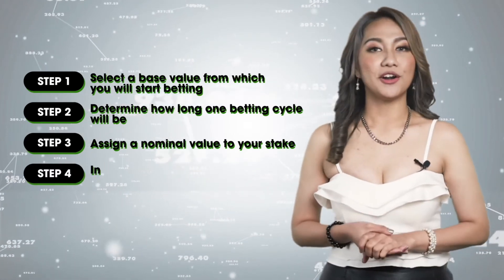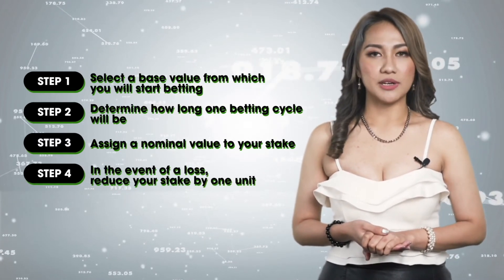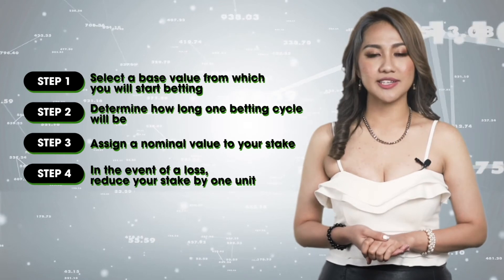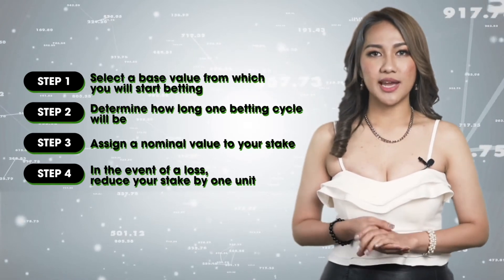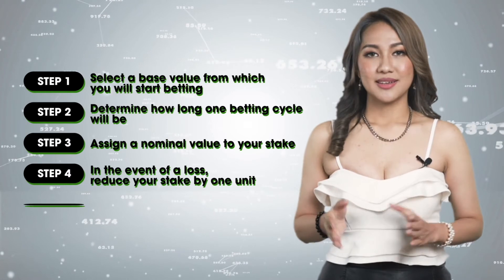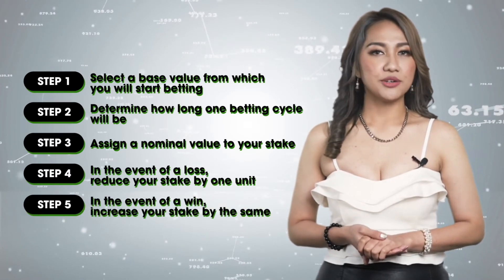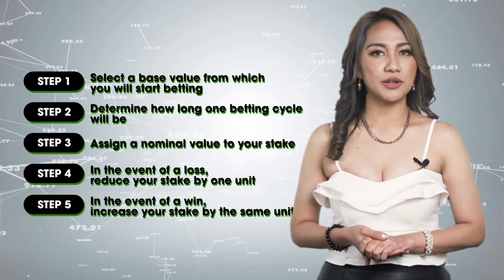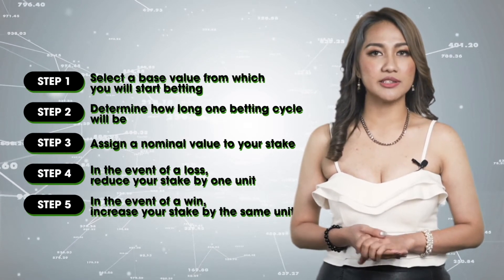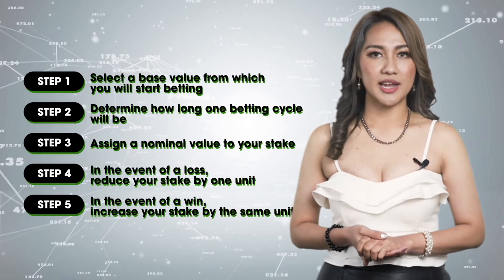Step number 4: Begin placing your wagers. In the event of a loss, reduce your stake by one unit — in this case $10 — which will lower your stake to $90. Step number 5: In the event of a win, increase your stake by the same unit. So if a bettor wins, he will raise his stake by $10, making the stake $100 again.